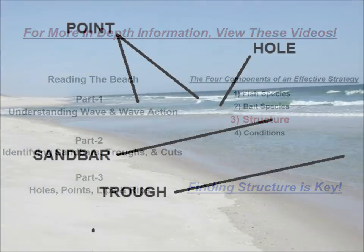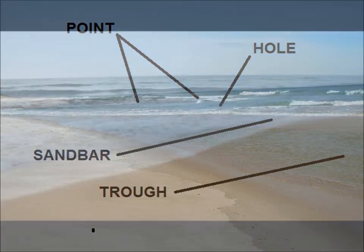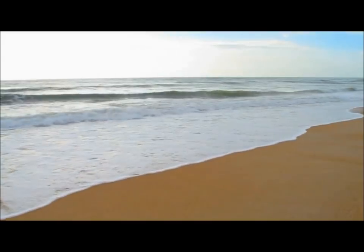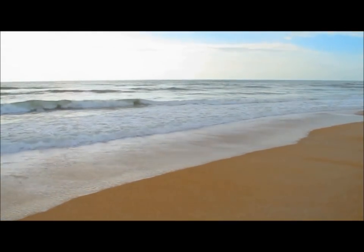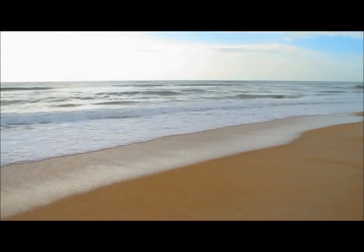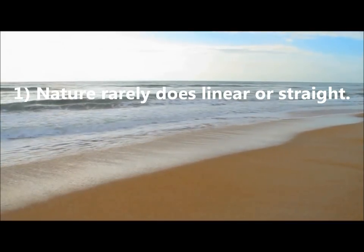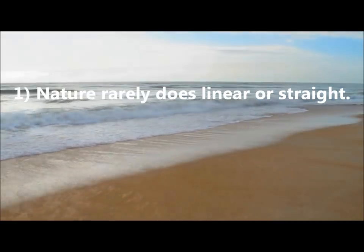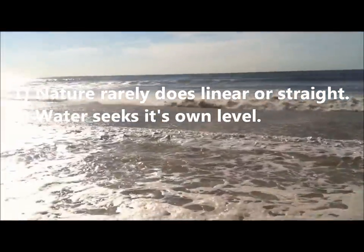While some beaches are blessed with abundant structure, many others are nothing more than long stretches of open beach with no real prominent structure. But regardless of how bland the beach may appear, there is usually some sort of structure around. This is because: 1. Nature rarely does anything linear or straight. 2. Water seeks its own level.